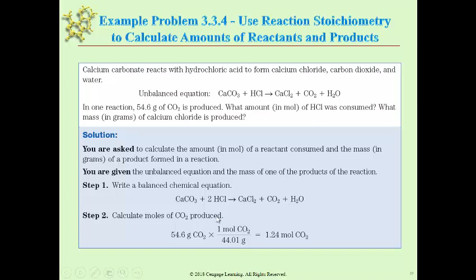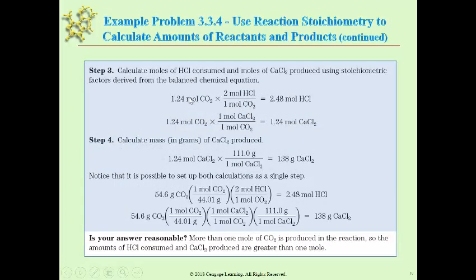Going to moles of HCl: you first go from grams of CO2 to moles of CO2 using the molar mass of CO2, which is 12 + 16 + 16 = 44.01 g/mol. So 54.6 grams of CO2 divided by its molar mass leaves you with moles of CO2. Then from the balanced equation, you have 2 moles of HCl for every 1 mole of CO2, so that doubles the number of moles of HCl needed to produce that much CO2.